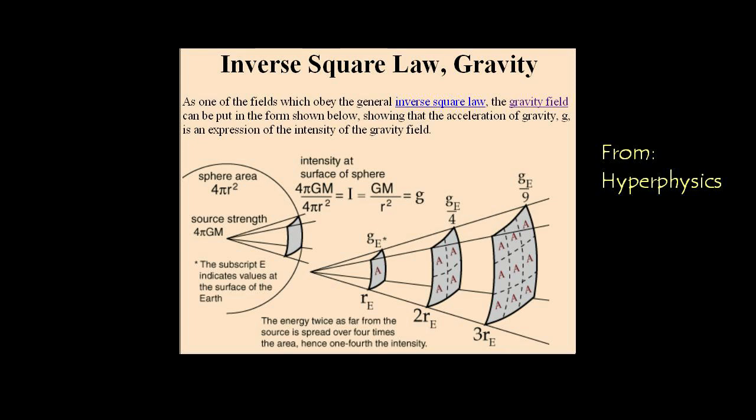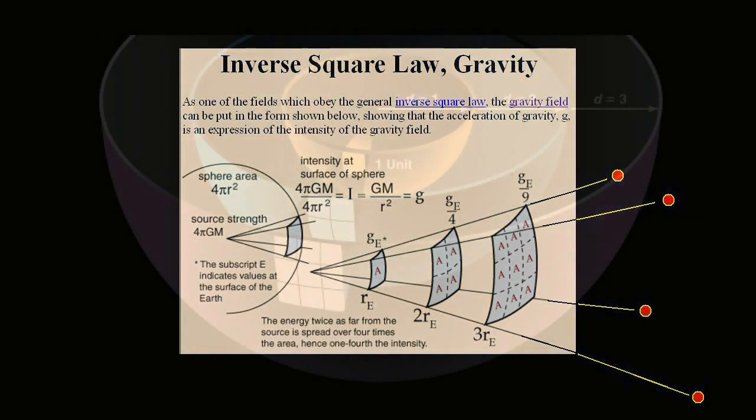This is the common conception of the gravitational field, varying by the inverse square law, shooting out a spray of gravitons as the source of the force of gravity. As the gravitons spread out through space, the same number pass through an ever-increasing area.